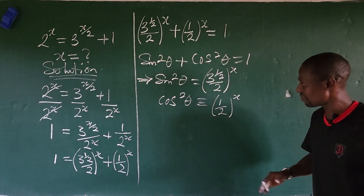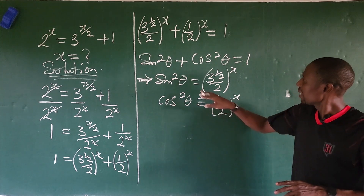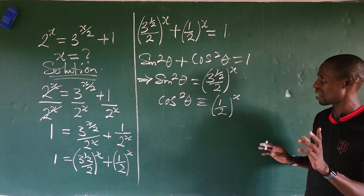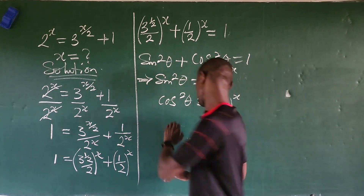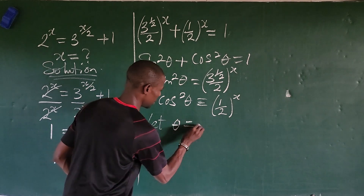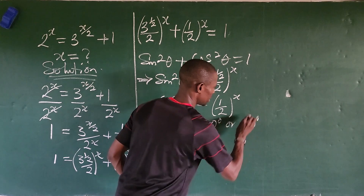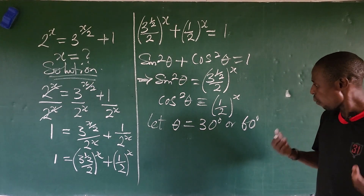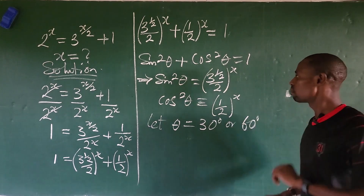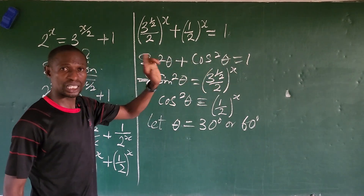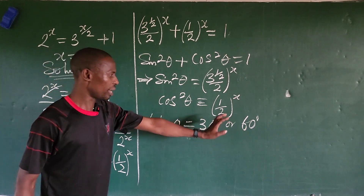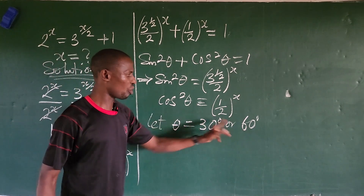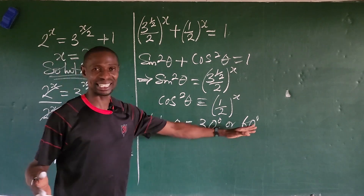Let's see if we can get the value of x. Since this expression corresponds to cosine, we can get two possible values for theta: 30 degrees or 60 degrees. You may wonder why we're not picking 45, 90, or 180 degrees. If you plug the expression into your calculator, it gives 0.8660, and the other gives 0.5, which corresponds to cos(60°). That's why we are picking 30 and 60 degrees.